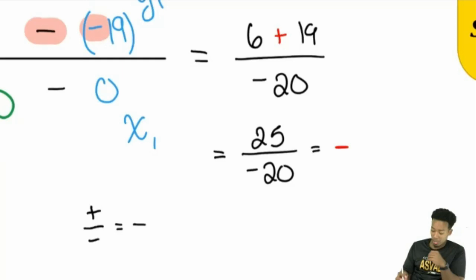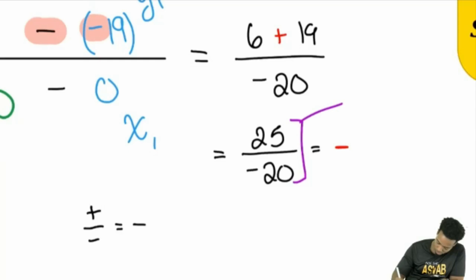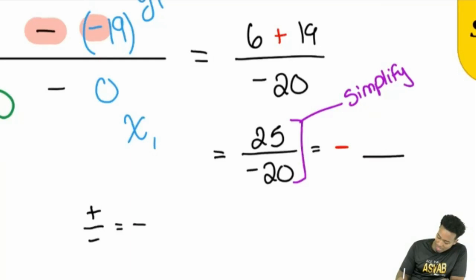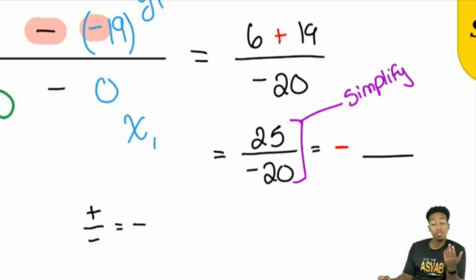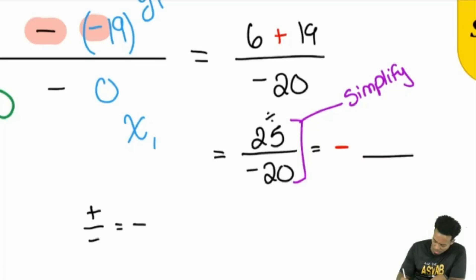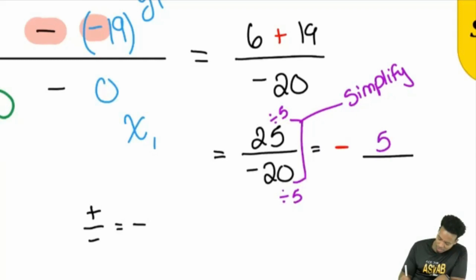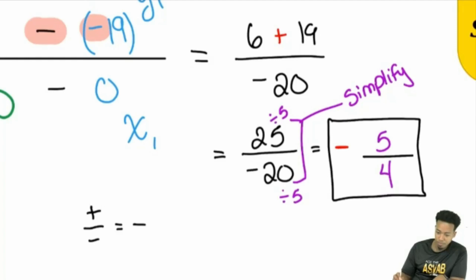We need to simplify the fraction 25 over 20. What number divides into both 25 and 20? They're both divisible by 5. Twenty-five divided by 5 is 5, and 20 divided by 5 is 4. So our final answer is negative 5 over 4.